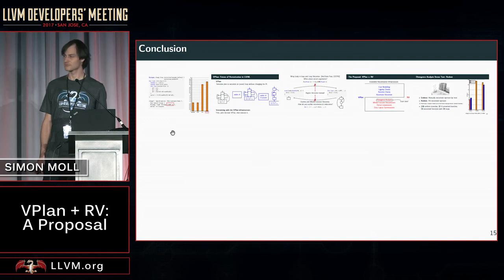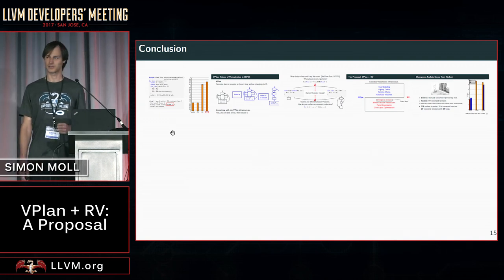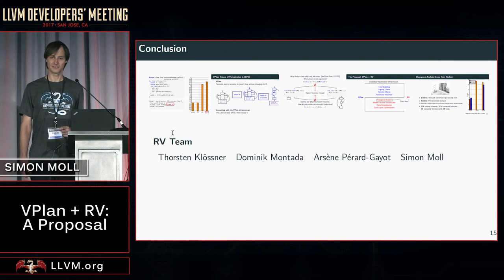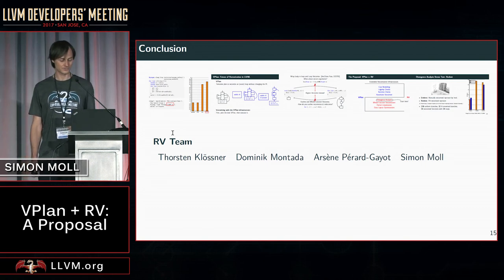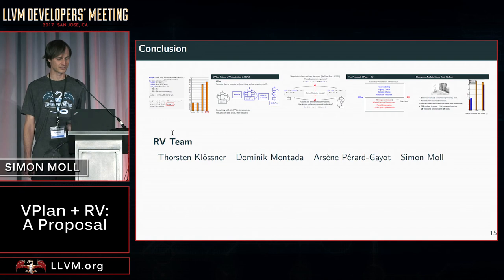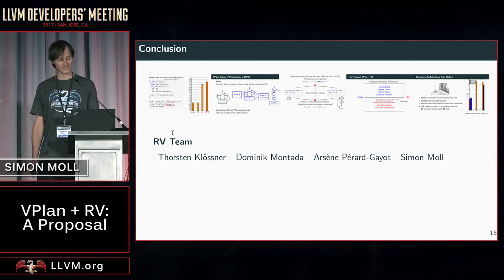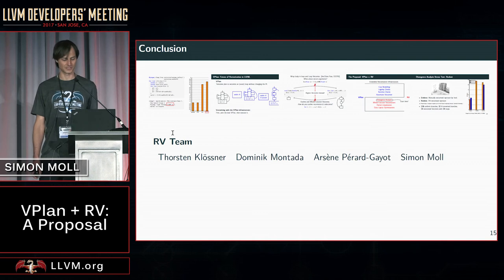To conclude: I showed you some of our results and what our plan is with this proposal, and how we're planning to go forward. RV is not being developed by me alone — I have two students working on it: a bachelor and master student who just finished, that's Torsten Klessner and Domi Matata. Then there's Azen who's written the ray tracer using RV, and then there's me.